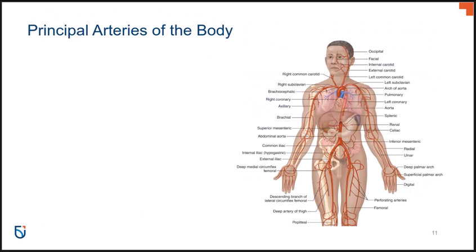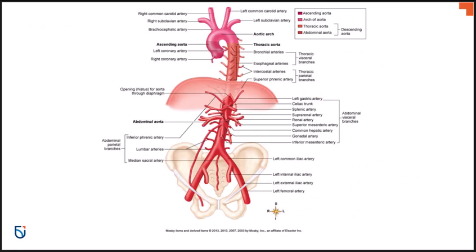We're going to look at the principal arteries and veins of the body, highlighting the ones you need to be aware of. The heart is located in this region, and the aorta branches off the heart. We call it the ascending aorta as it ascends off the heart; as it hooks around, it's called the aortic arch; and as it drops down it's called the descending aorta. The descending aorta in the thoracic area is the thoracic aorta, and once it pierces through the diaphragm, it becomes the abdominal aorta in the abdominal region.